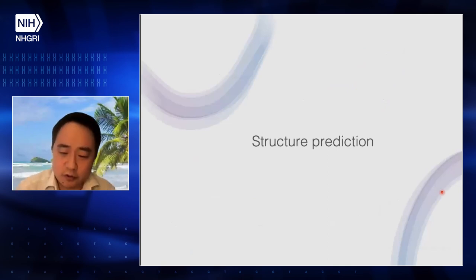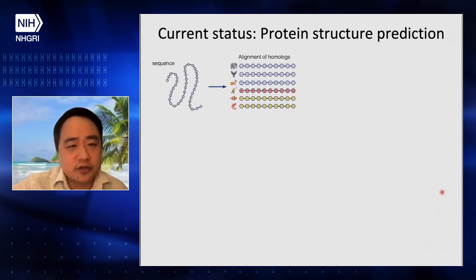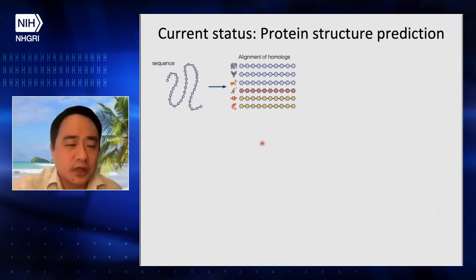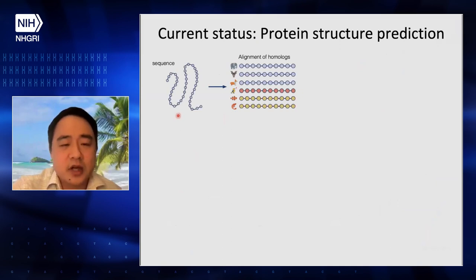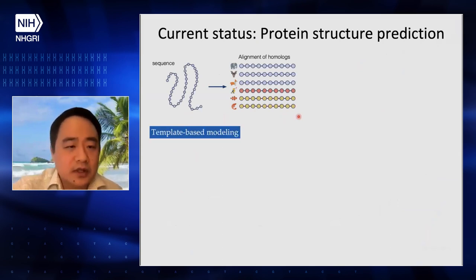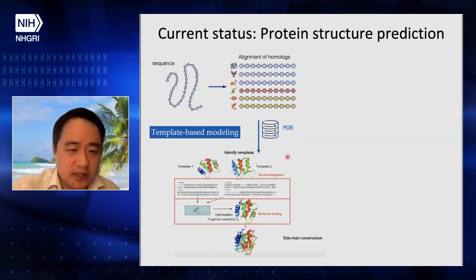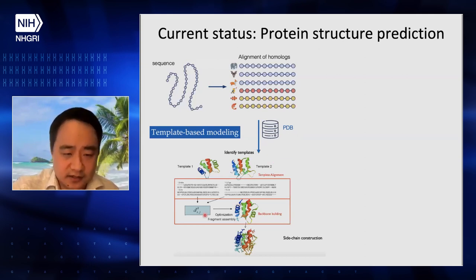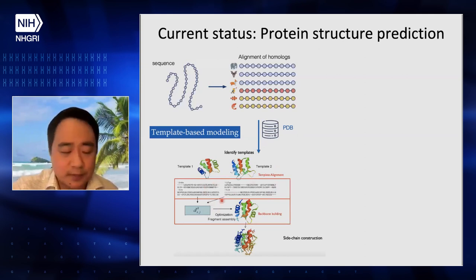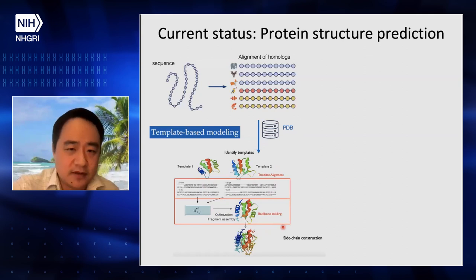There are currently two different approaches for protein structure prediction. The first step is always the same: given a protein sequence, we use sequence search algorithms to find all homologous sequences and build a multiple sequence alignment. Traditionally, the best and most reliable approach is called template-based modeling, where we build hidden Markov models or some kind of sequence profile, search against the PDB structural database, identify possible templates, and extract pairwise distances or geometric constraints. We copy coordinates from the templates, build the backbone structure, add side chains, and this method has been very reliable but hit a performance bottleneck for quite a few years.